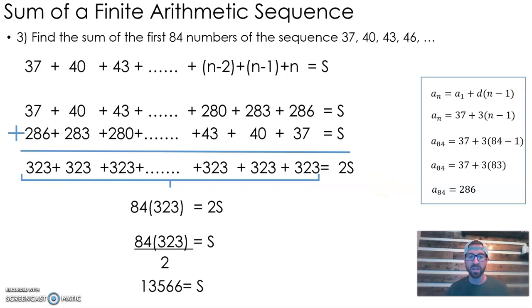This gives us 13,566 as the answer to this question. But let's generalize that pattern. The 84 is just how many terms we were adding, and 323 is simply the sum of the first term and the last term. So if you know the first term, the last term, and how many terms you're adding, you can evaluate that series. This is the formula to write down.